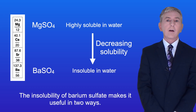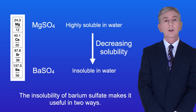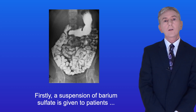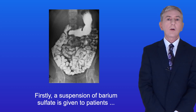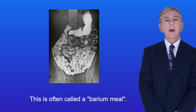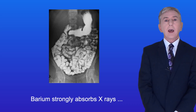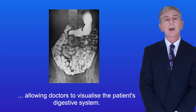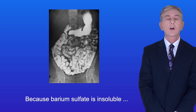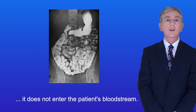The insolubility of barium sulfate makes it useful in two ways, and AQA students need to be able to describe these. Firstly, a suspension of barium sulfate is given to patients before they have an x-ray of their digestive system. This is often called a barium meal. Barium strongly absorbs x-rays, allowing doctors to visualize the patient's digestive system. And because barium sulfate is insoluble, it does not enter the patient's bloodstream.